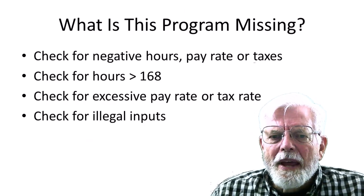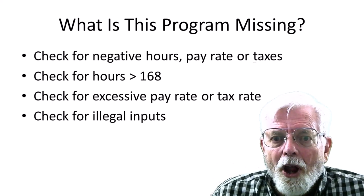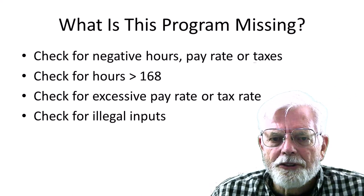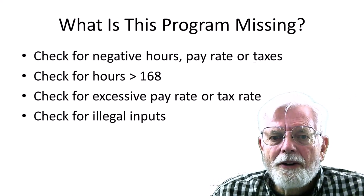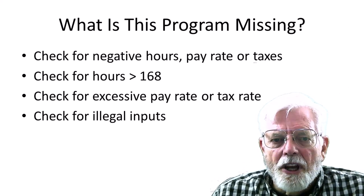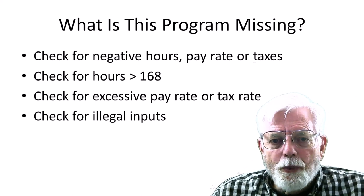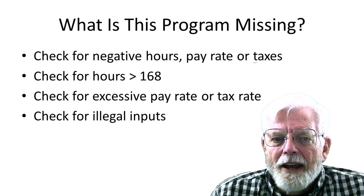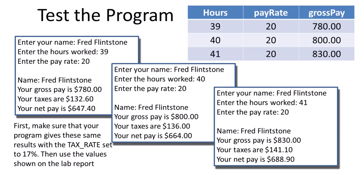What is this program missing? This may seem like a big task for your first program, but a lot of code is missing to make a robust program that is more user friendly and able to detect and handle bad inputs. Here are some of the things that are missing that we will need to learn how to process in later projects: Check for negative hours pay rate or taxes. Check for hours greater than 168. That's the maximum number of hours in one week. Check for excessive pay rate or tax rate. Check for illegal inputs. Since this program can process a paycheck that does not have overtime, 40 hours or less, and also a paycheck that has overtime more than 40 hours, it is also important to test the program at 40 hours to make sure that the program did not check for only greater than and less than and skip testing for 40. It is important to test for each of the possible conditions.